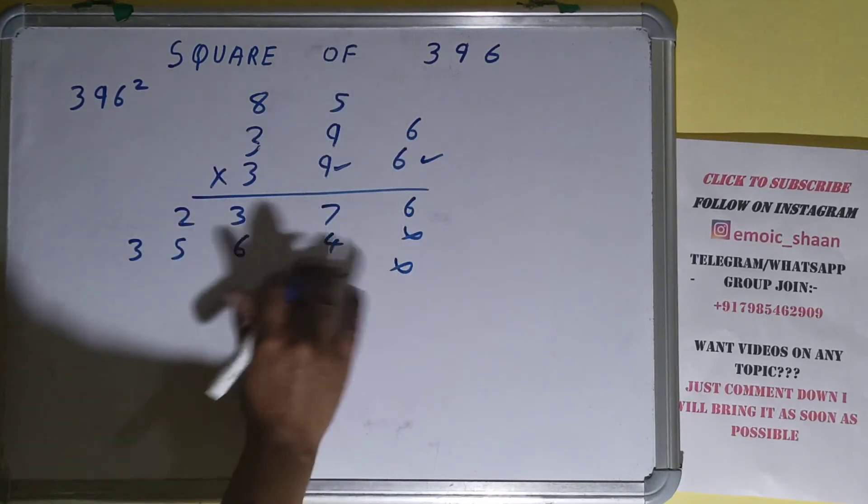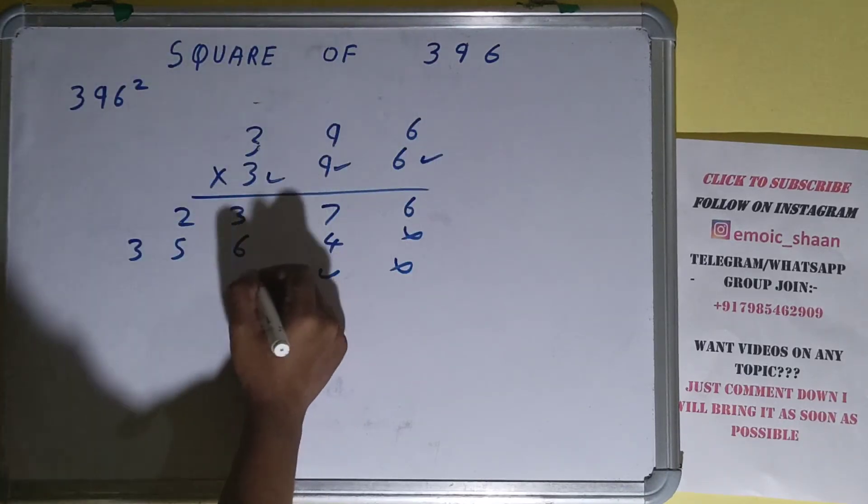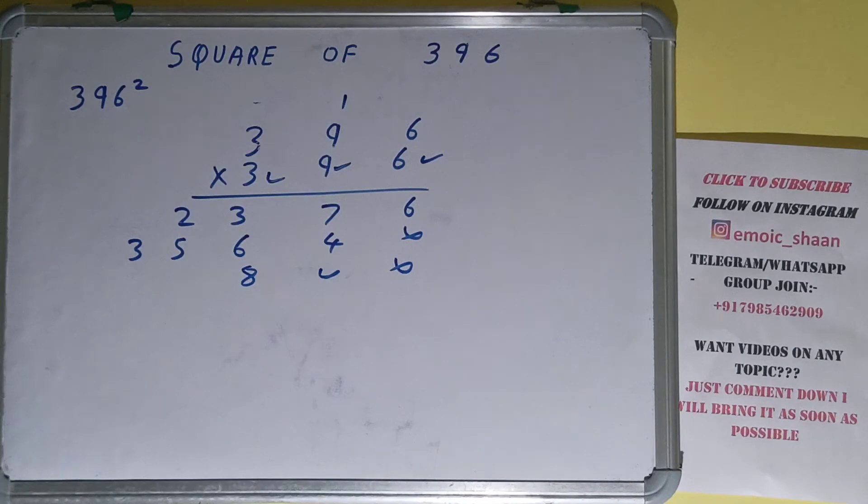Now the last one: 6 × 3 = 18, 1 carry. 9 × 3 = 27 plus 1 is 28.